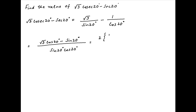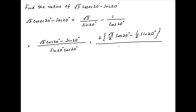Now we multiply and divide by 2 in both the numerator and the denominator. So this expression becomes 2 times, in brackets, root 3 upon 2 times cos 20 degrees minus half of sin of 20 degrees, divided by 2 times sin 20 degrees times cos 20 degrees multiplied by half.